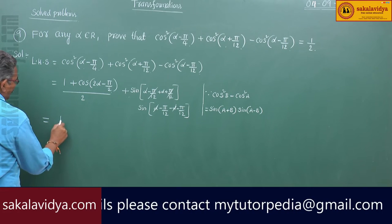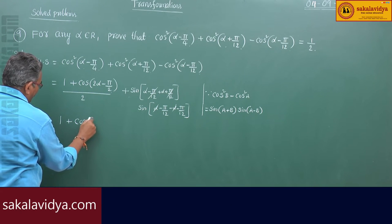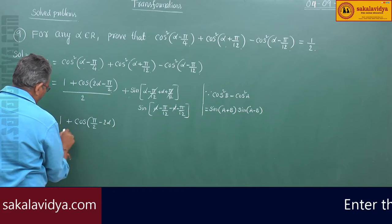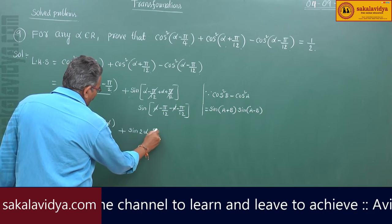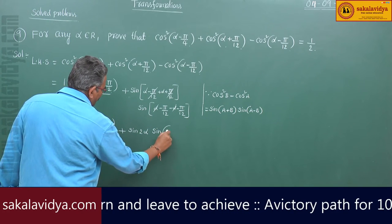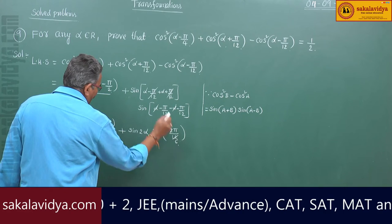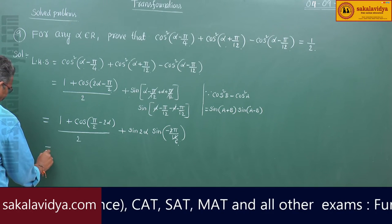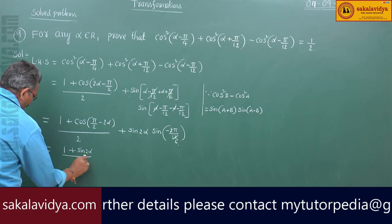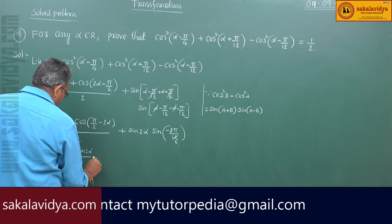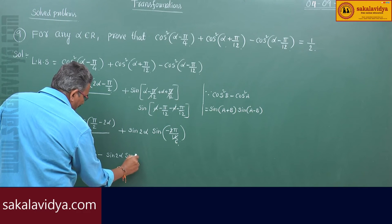We have 1 plus cos(a minus b) equal to 2 cos of (b minus a). This can be written as (1 minus cos(pi by 2 minus 2 alpha)) by 2, giving (1 plus sin 2 alpha) by 2. Since cos(90 minus theta) is sin theta, this becomes sin of minus 2 alpha, which is sin pi by 6, and sin pi by 6 is sin 30.